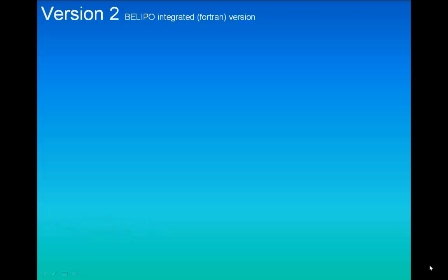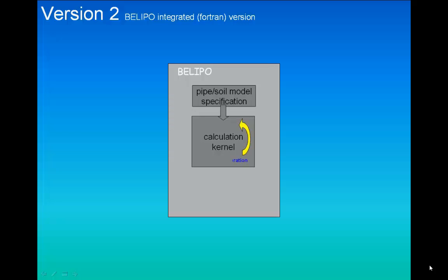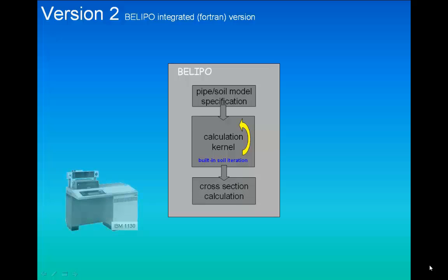The call for a more efficient and integrated program was met with version 2. The three separate program blocks from version 1 were put together in a program called Bulipo. This required upgrading of our know-how, as the calculation method in the FRAN program had to be replicated in the solver of this new version. The development of subroutines of various levels was done on an IBM 1130 computer belonging to the importer of Volvo trucks in Rijswijk — during the day they did their administrative work and at night we did our software development. The internal memory of this machine was 48 kilobytes. The assembled software parts were tested on the IBM mainframe.